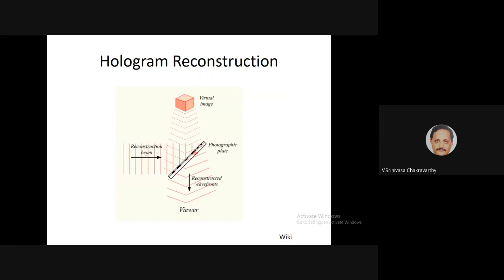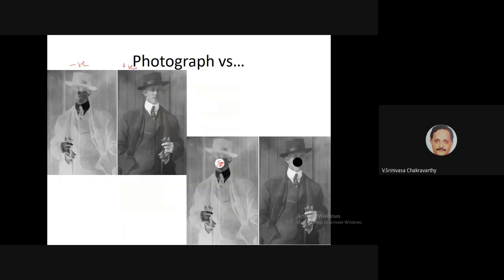What is different about a holographic visual compared to a normal photograph is that a photograph only captures the light intensity pattern, whereas a hologram also captures the phase pattern. So the object looks more realistic — like a 3D version rather than flat like a photograph.